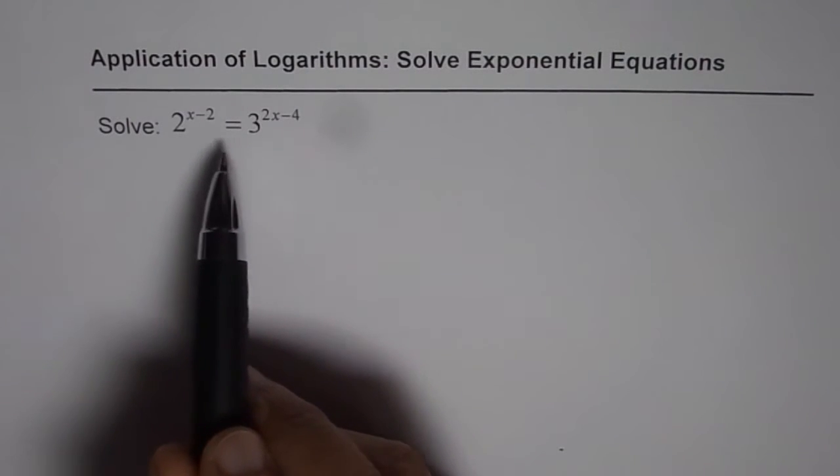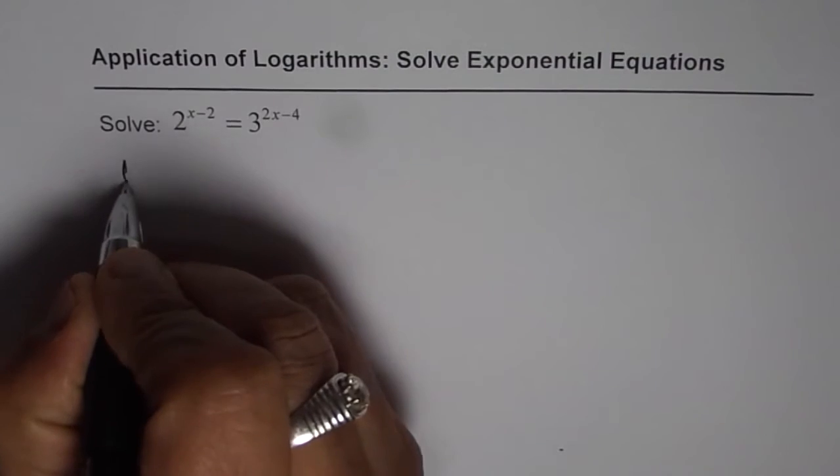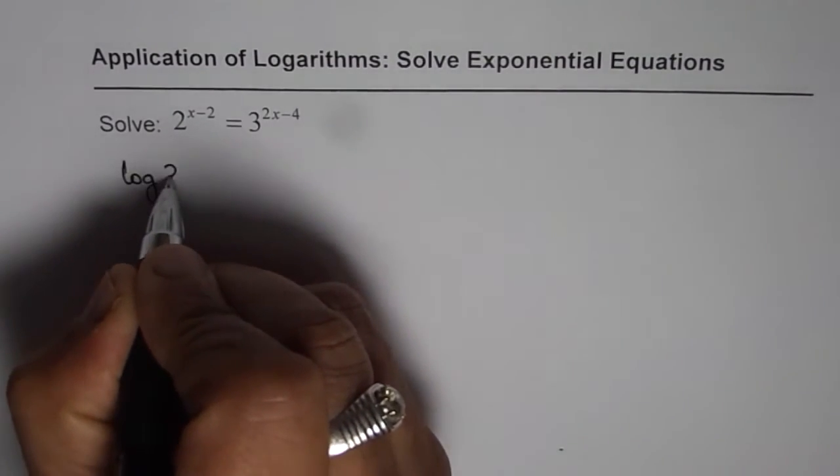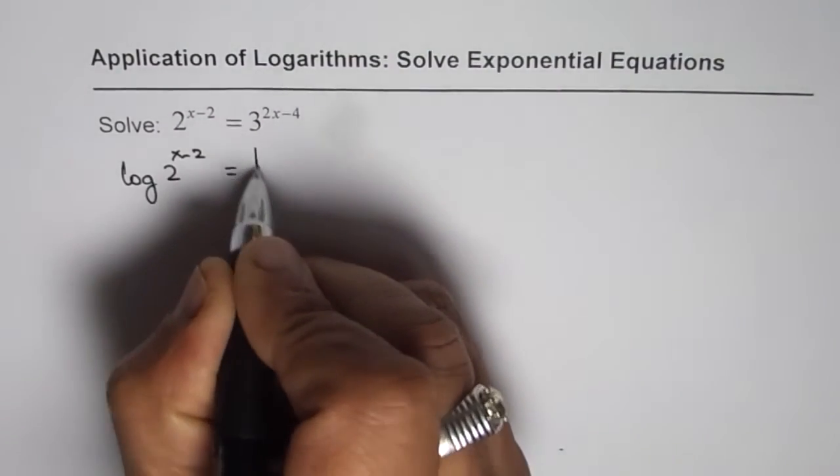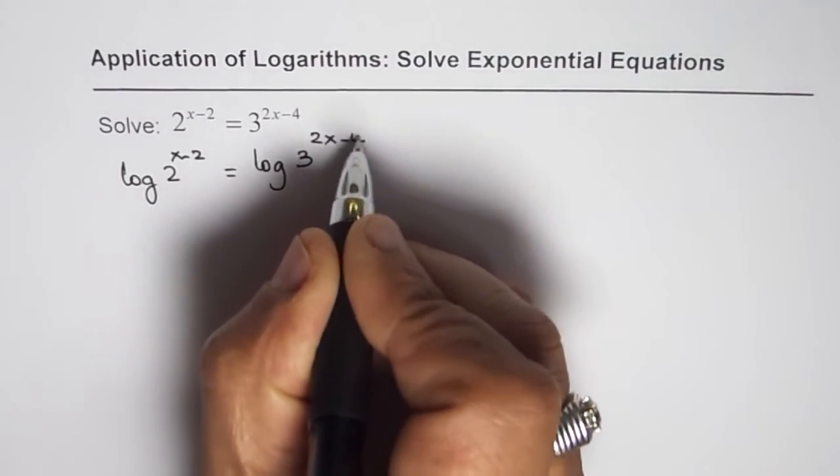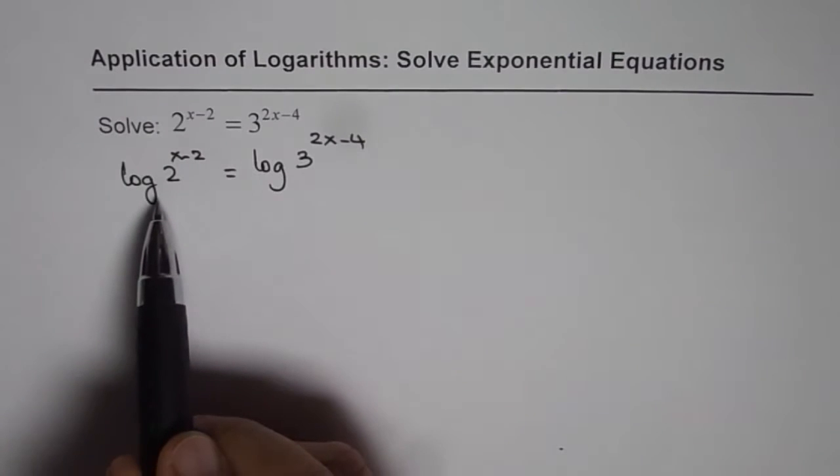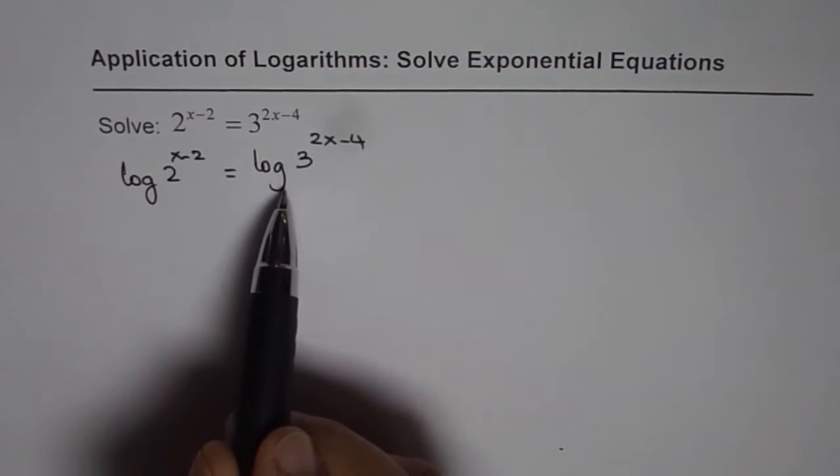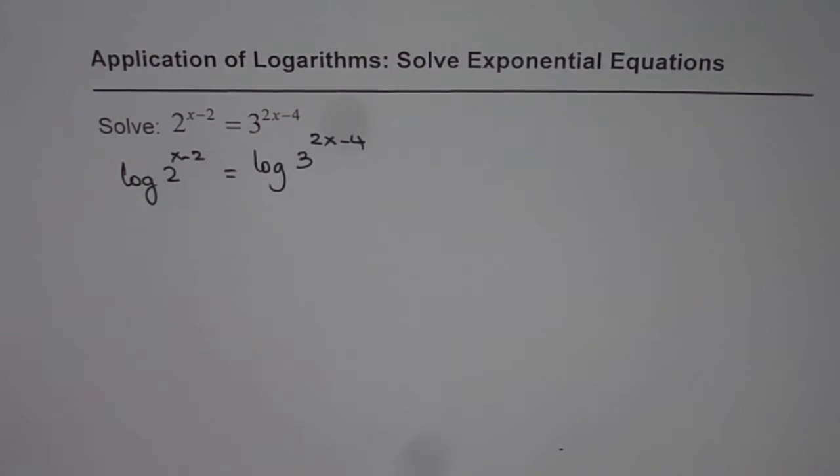So let's take log on both sides. Then we get log of 2 to the power of x minus 2 equals log of 3 to the power of 2x minus 4. I'm not writing any base, that means the default value 10 is being applied. Now it is advantageous to use base 10 since you can use the calculator. Or you can take ln which is log to the base e.